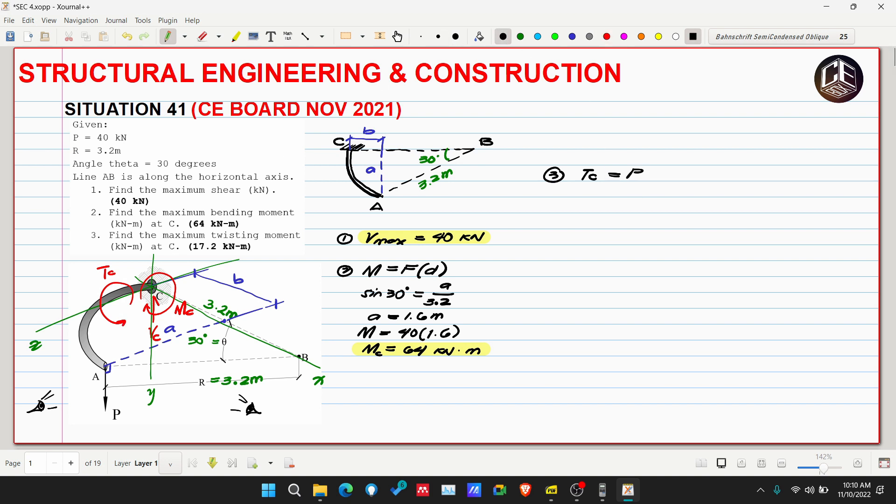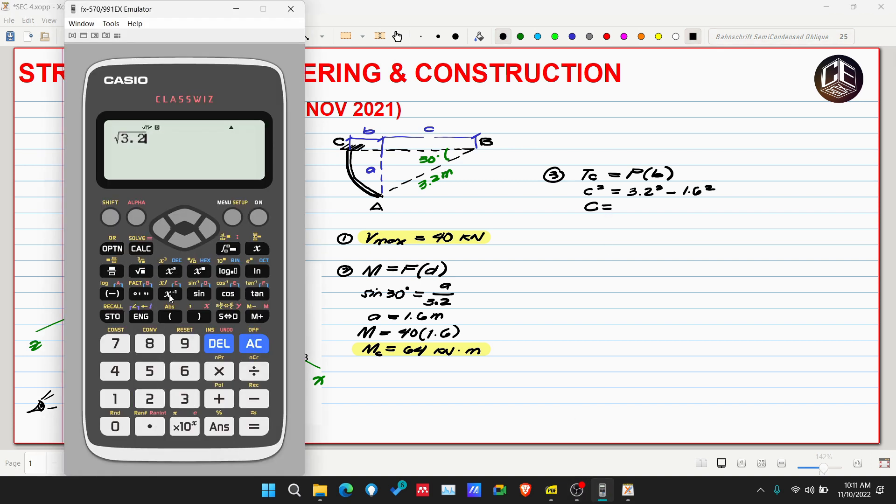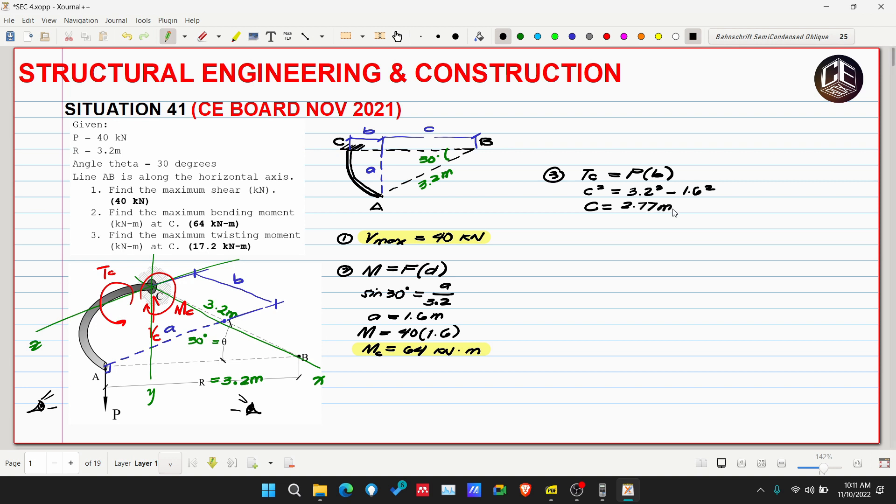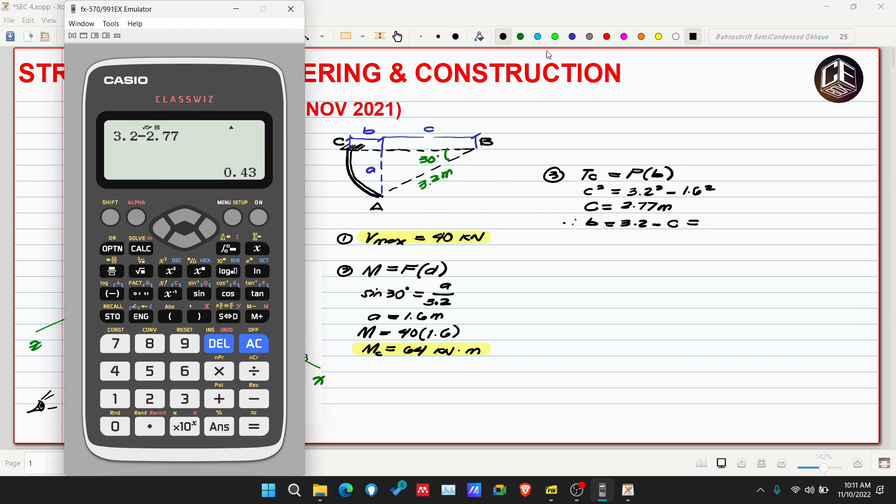So Tc is equivalent to force P multiplied by distance b, which we can get from this distance. If this is hypotenuse, this is opposite, this is adjacent to 30 degrees, so we can use cosine, or since we already got a, we can use Pythagorean theorem. So c squared is equivalent to 3.2 squared minus a squared, which is 1.6. 3.2 squared minus 1.6 squared, so 2.77 meters. So that means our b is equivalent to r of 3.2 minus c, so 3.2 minus 2.77, this is 0.43 meters.